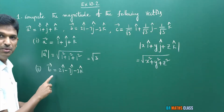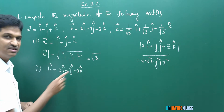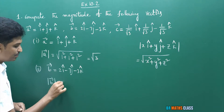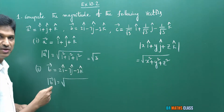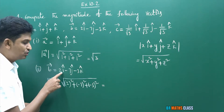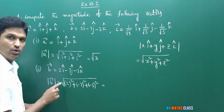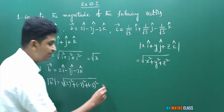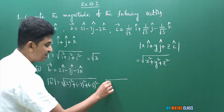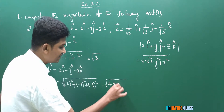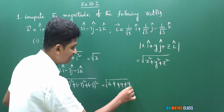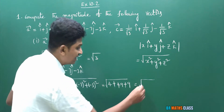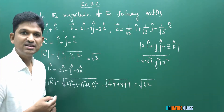Now observe the second vector: b bar = 2i cap − 7j cap − 3k cap. The scalar components are 2, −7, −3. So the magnitude is the square root of 2² + (−7)² + (−3)², which is root of 4 + 49 + 9. That is root of 62. So the magnitude of b bar is root 62.